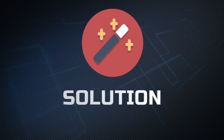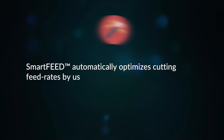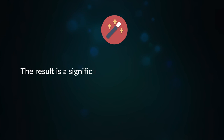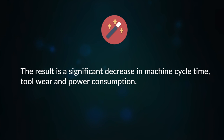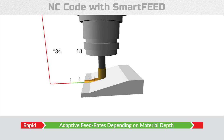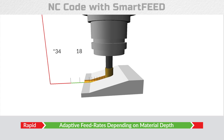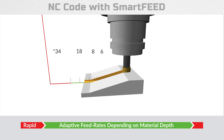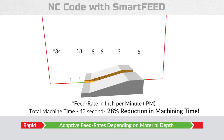The solution. In this example, the feed rate was automatically adjusted according to the depth of material, and the result was a 28% reduction in machining time.